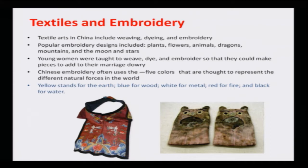Another form is textiles and embroidery. Textile art in China includes weaving, dyeing, and embroidery. Popular embroidery designs include plants, flowers, animals, mountains, and moons. Young women were taught to weave, dye, and embroider so that they could make pieces to add to their marriage dowry. Chinese embroidery often uses five colors thought to represent different natural forces in the world: yellow, blue, white, red, and black. Yellow represents the earth, blue represents wood, white represents metal, red represents fire, and black represents water.